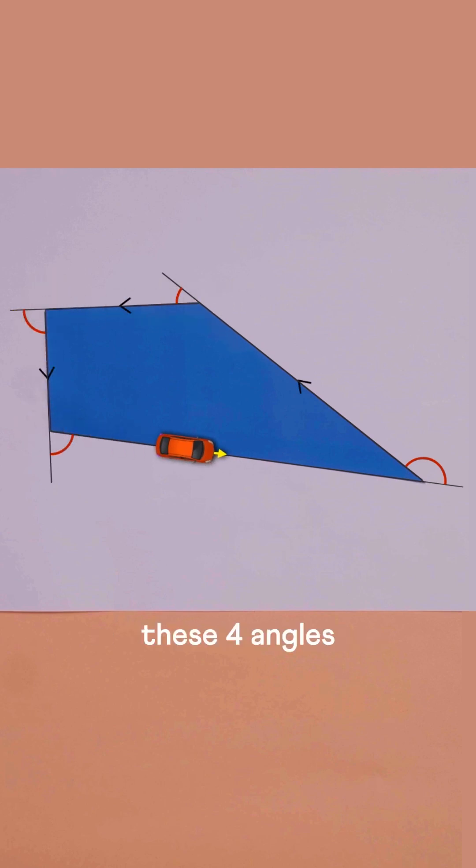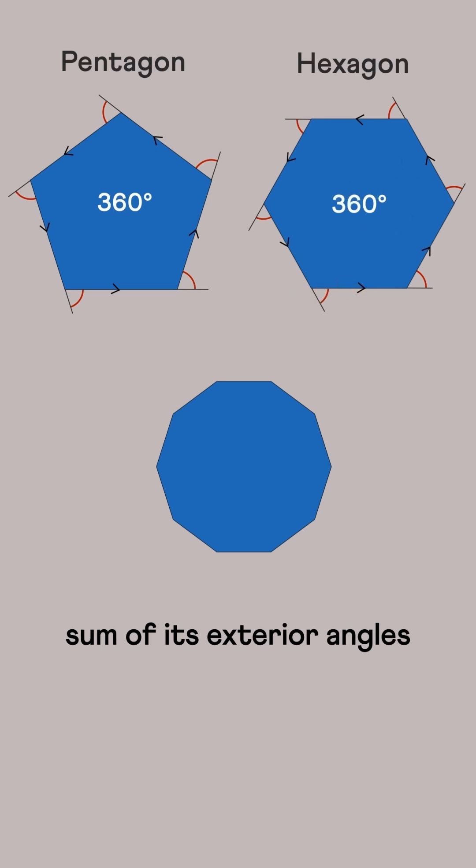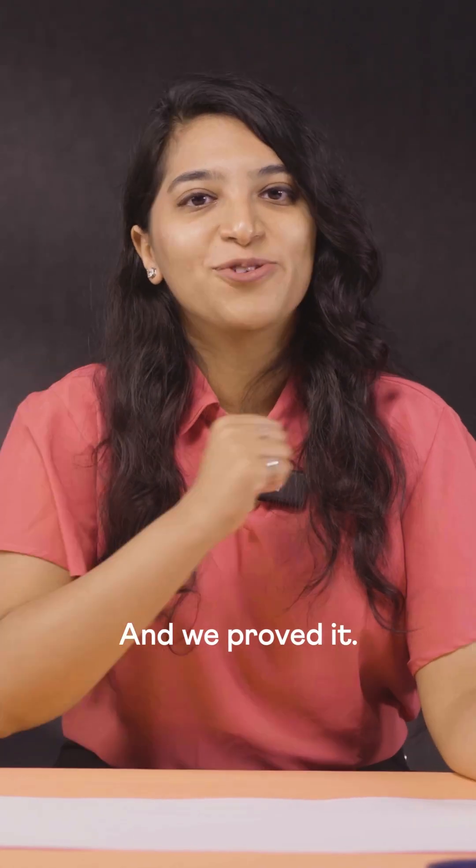So again, these four angles must make one complete turn and their sum must equal 360 degrees. So take any polygon, however large or small with any number of sides. The sum of its exterior angles must be 360 degrees and we proved it.